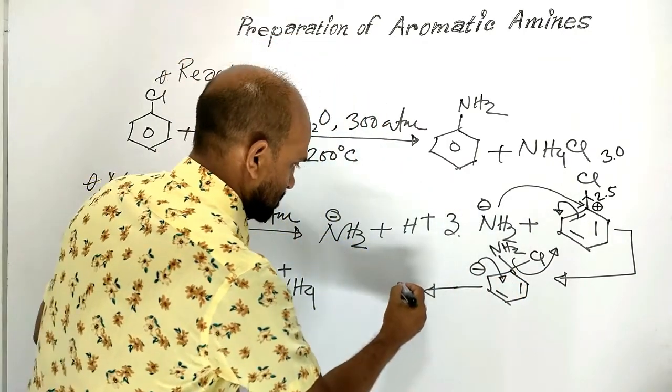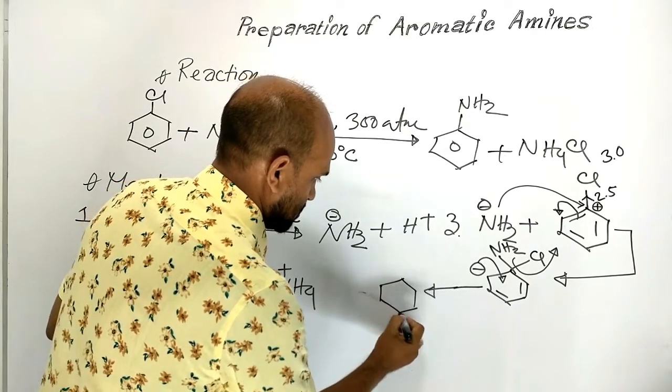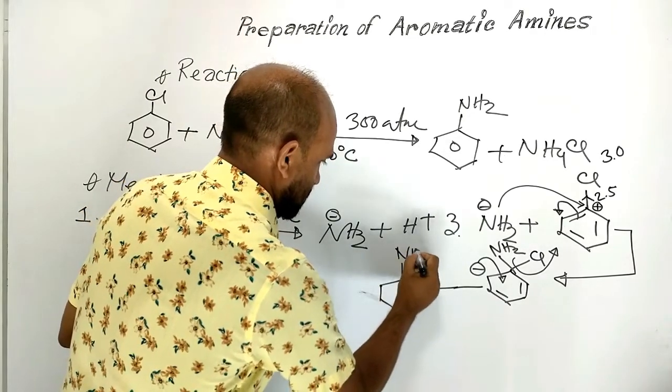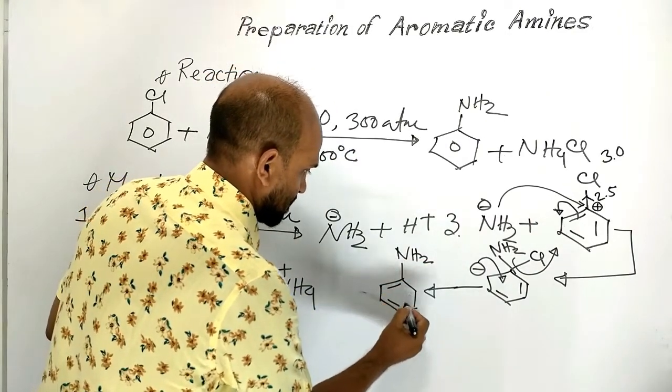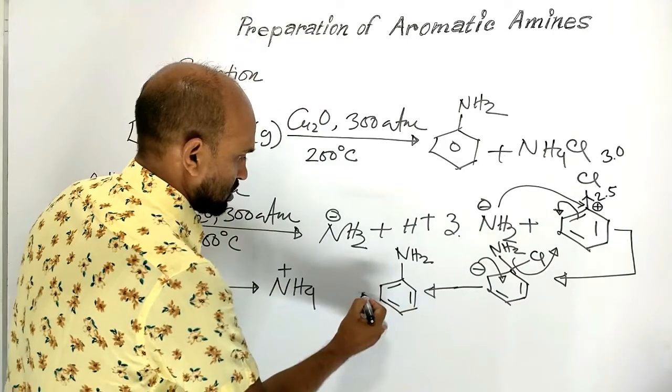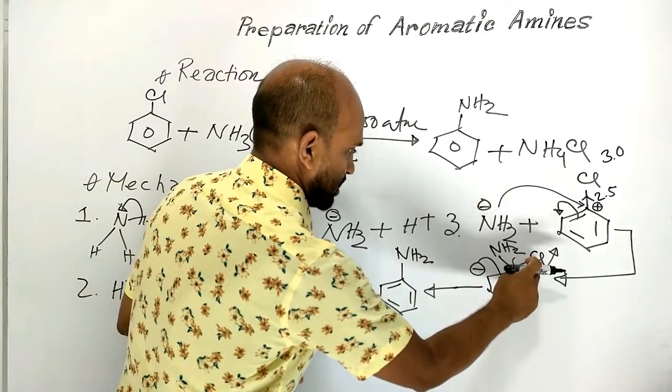Then we get this compound NH2, again double bond, here double bond, here double bond, plus chloride ion. This chloride ion.